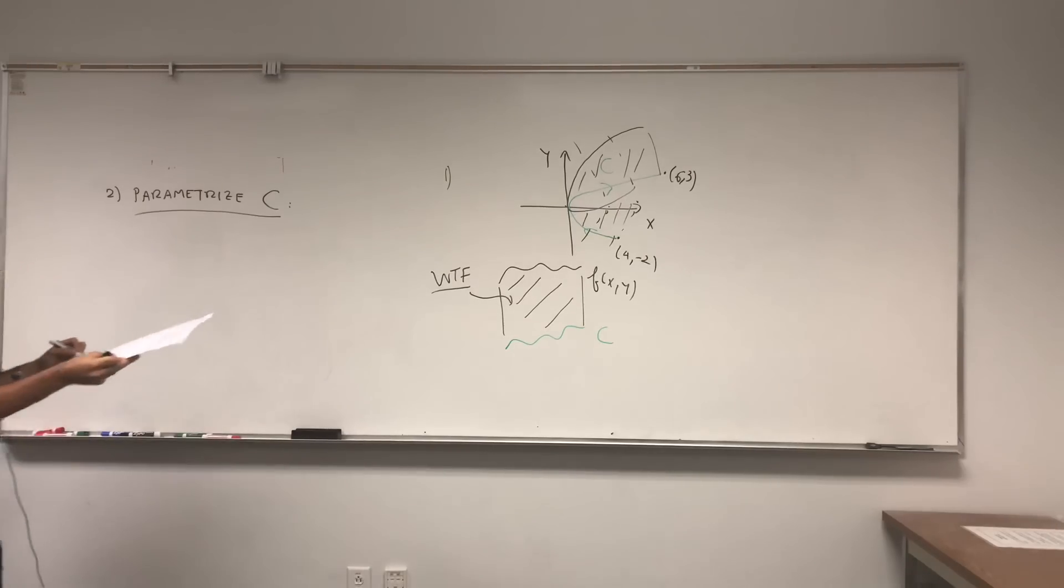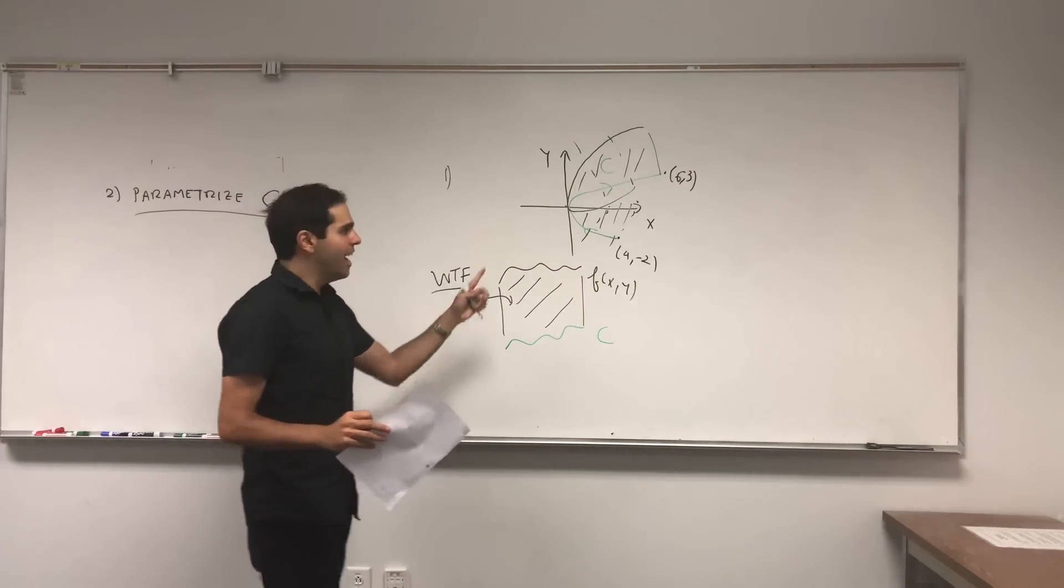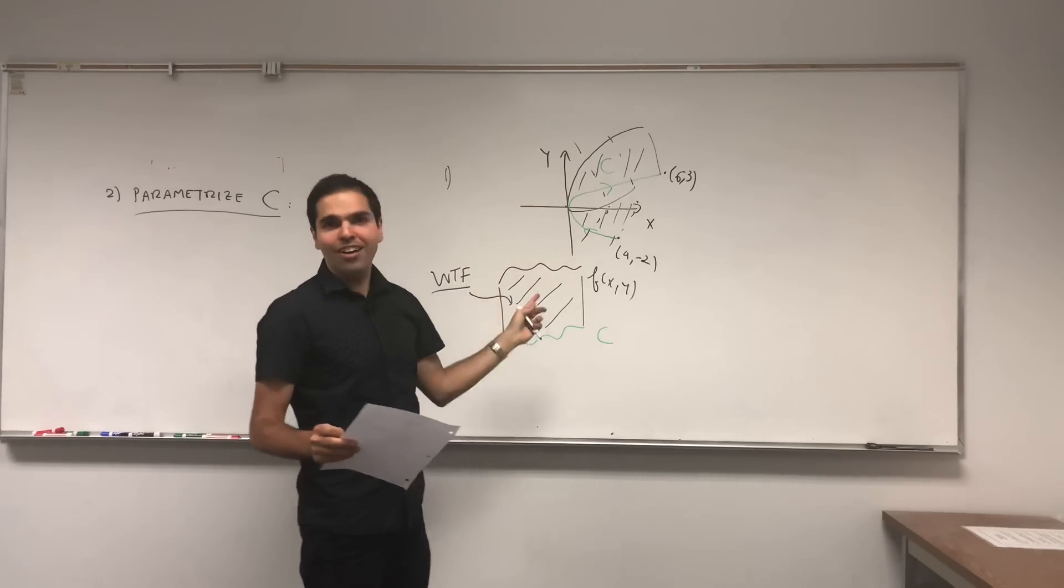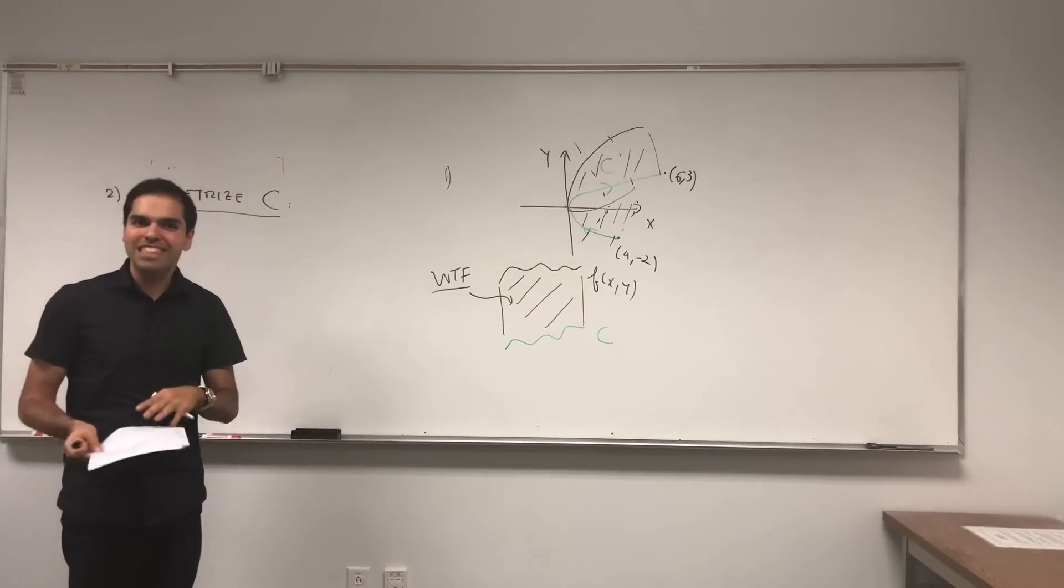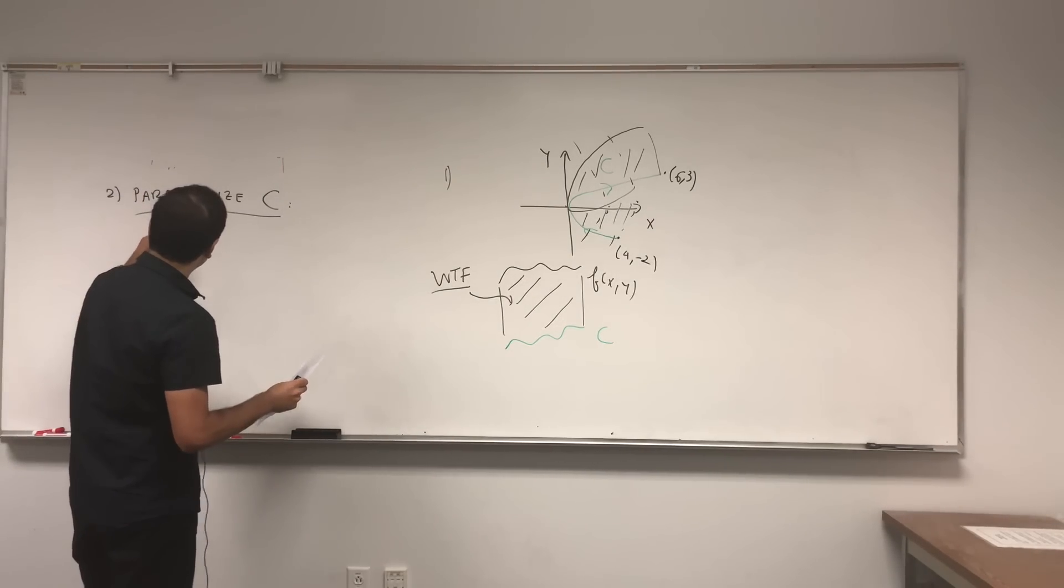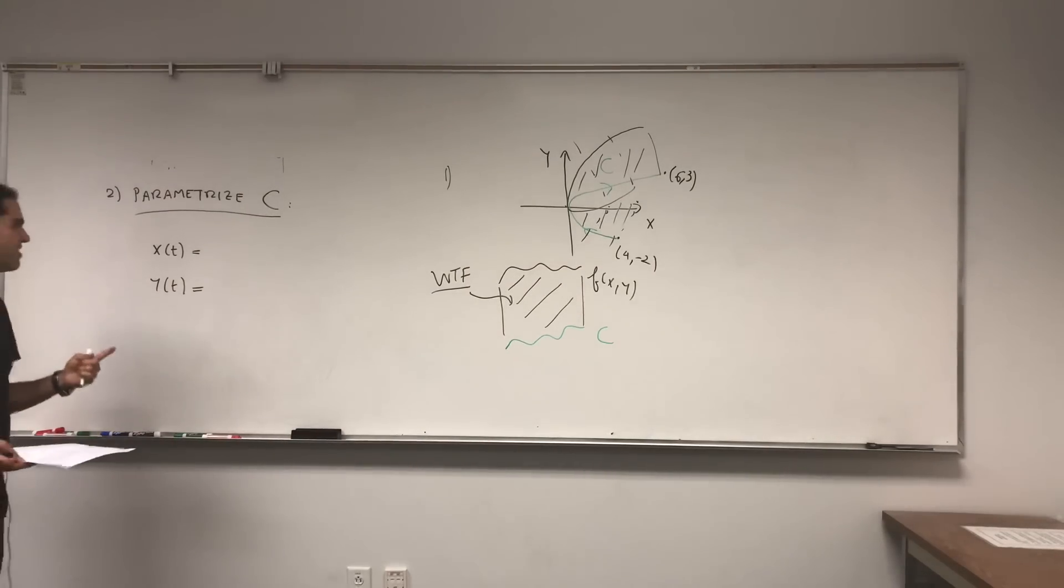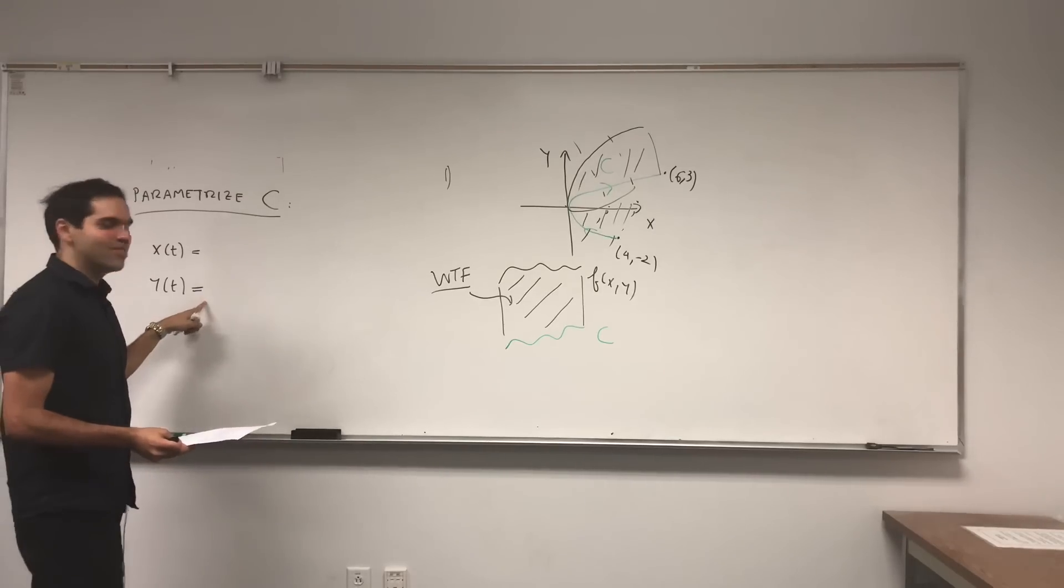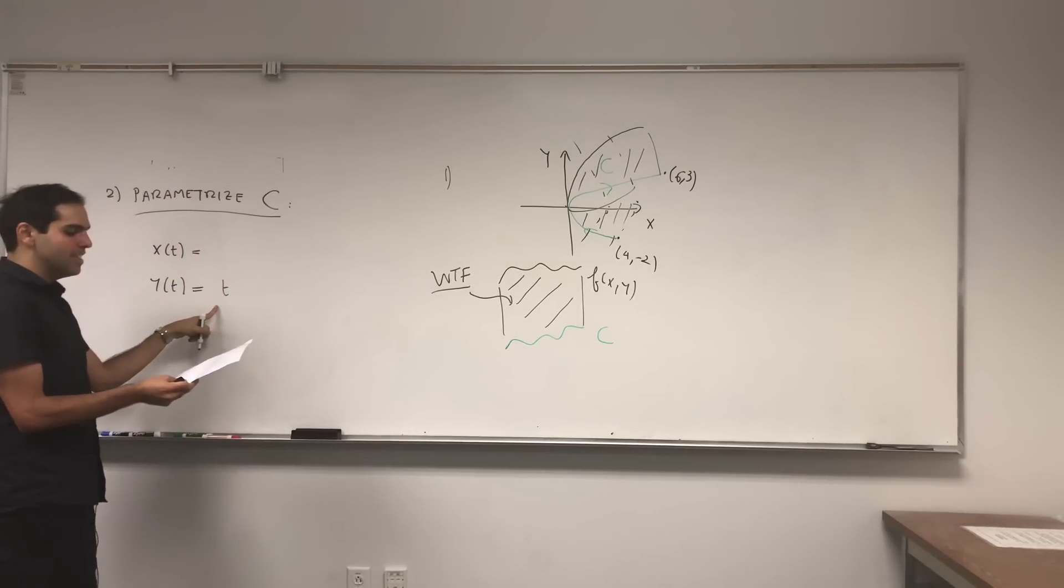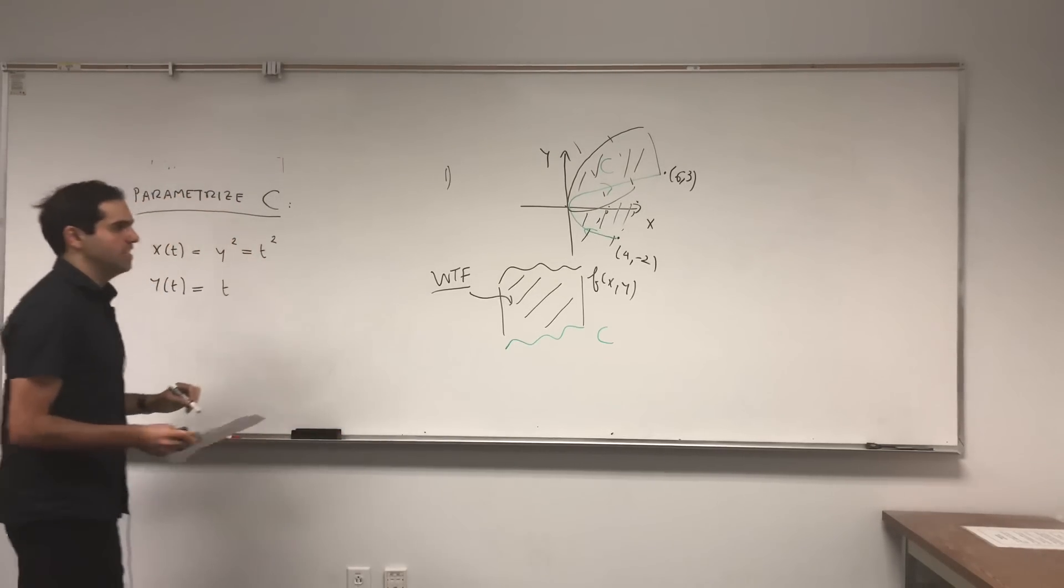Well, in this case, essentially C is given by a function in terms of Y. And the idea is, for functions you just let one parameter be T and the other one be your function. So in this case, X of T and Y of T, because x equals to y squared, it's easier to start with Y. So let Y be T, and then X, remember it's y squared, but Y is T, so this becomes T squared.